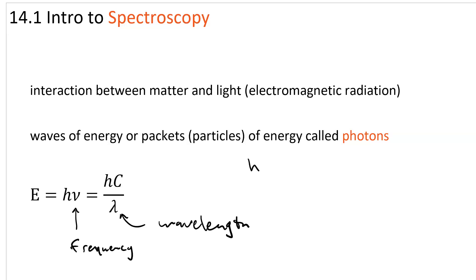h is Planck's constant, 6.626 times 10 to the negative 34th joules times seconds. And c is the speed of light, 2.998 times 10 to the 8th meters per second.